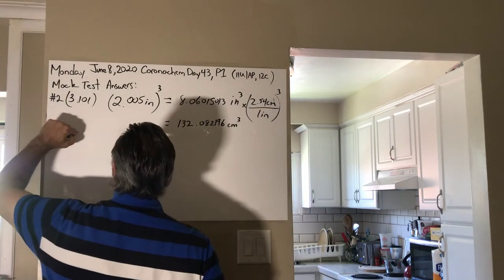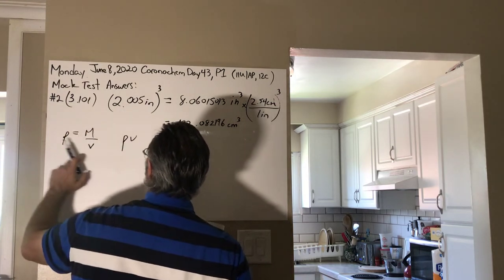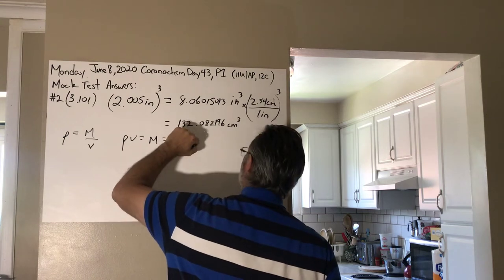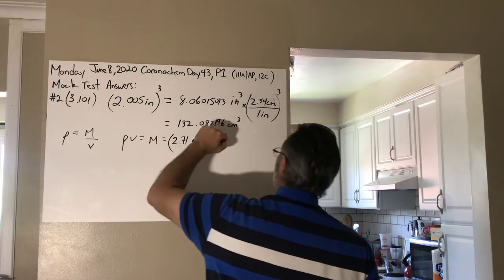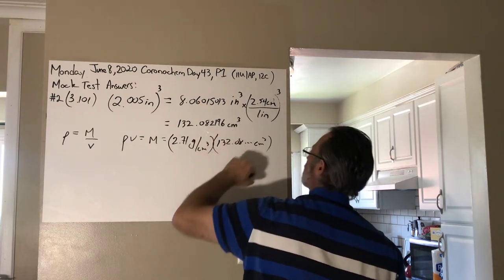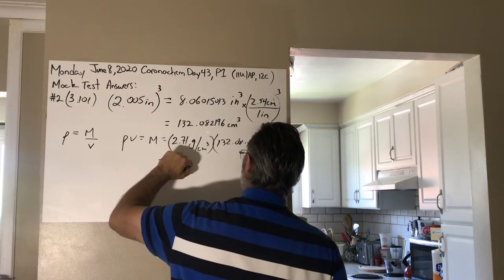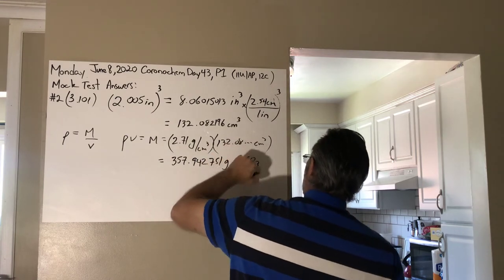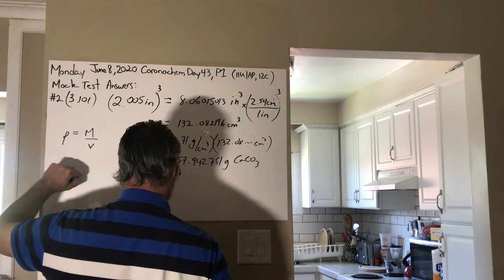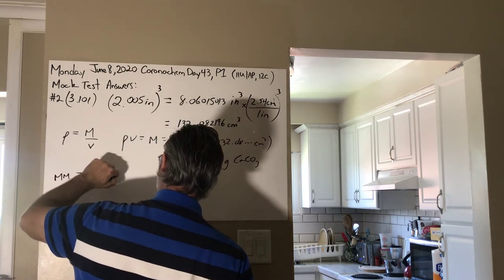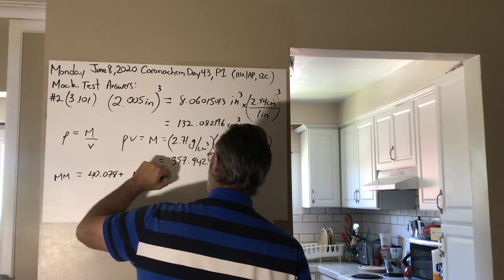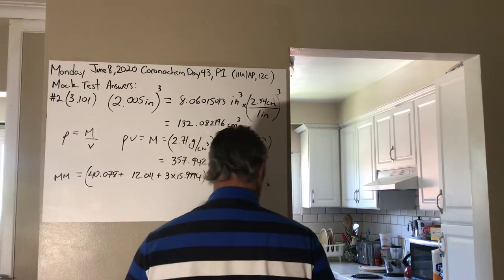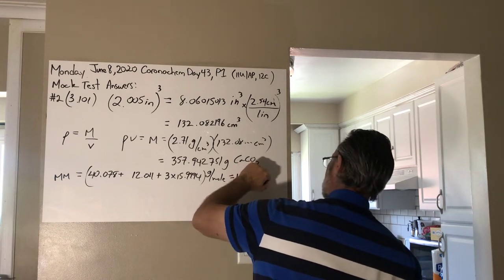Now we're going to use density equals mass over volume. We're trying to solve for the mass of the thing. So density times volume is going to give you the mass. The density of the substance that the cube is made of is 2.71 grams per centimeter cubed, times 132.08 centimeters cubed, means that you end up having 357 grams of substance. And that substance is calcium carbonate. With a molar mass of 40.078 for the calcium, 12.011 for the carbon, and 3 times 15.994 for the oxygen. Yielding a molar mass of 100.0872 grams per mole.